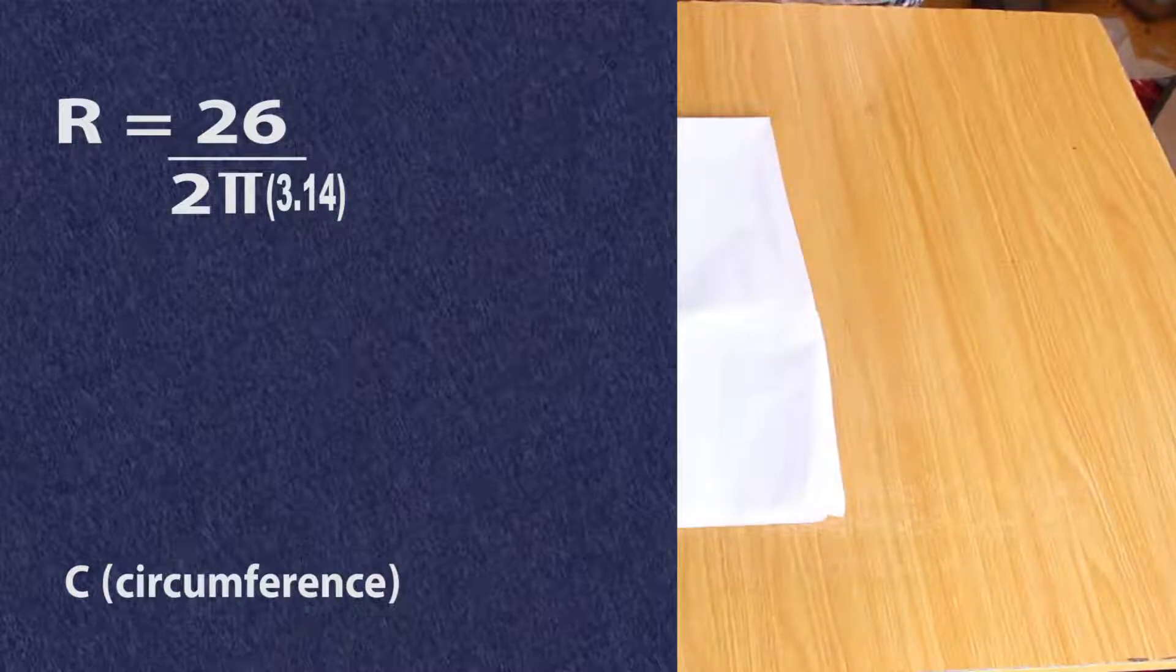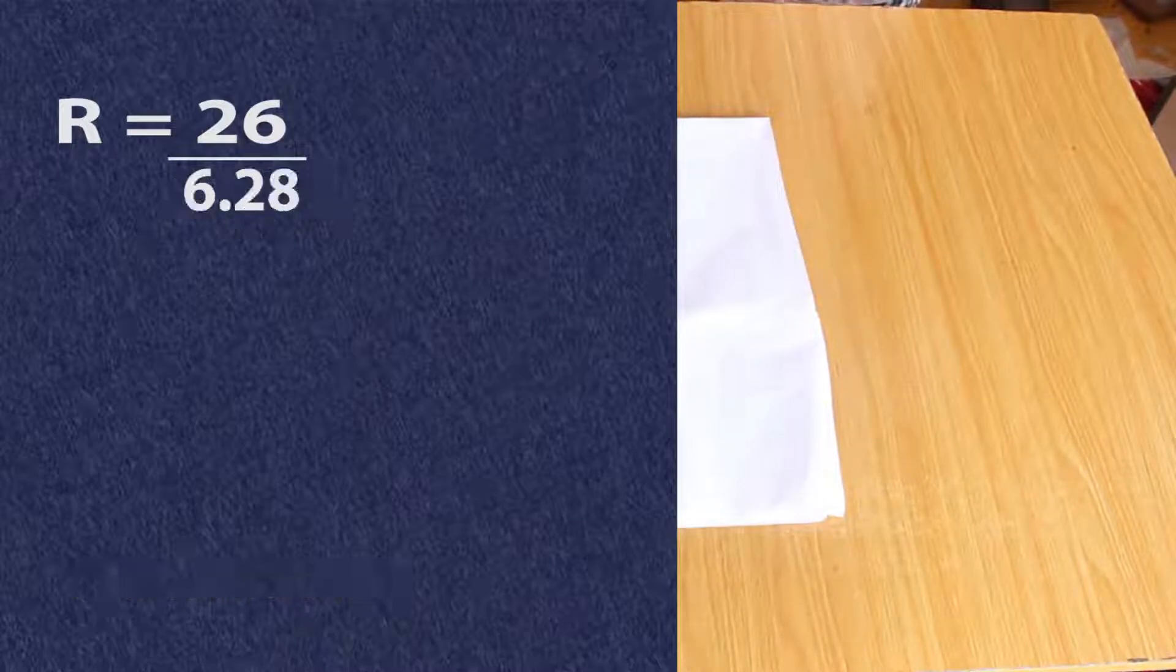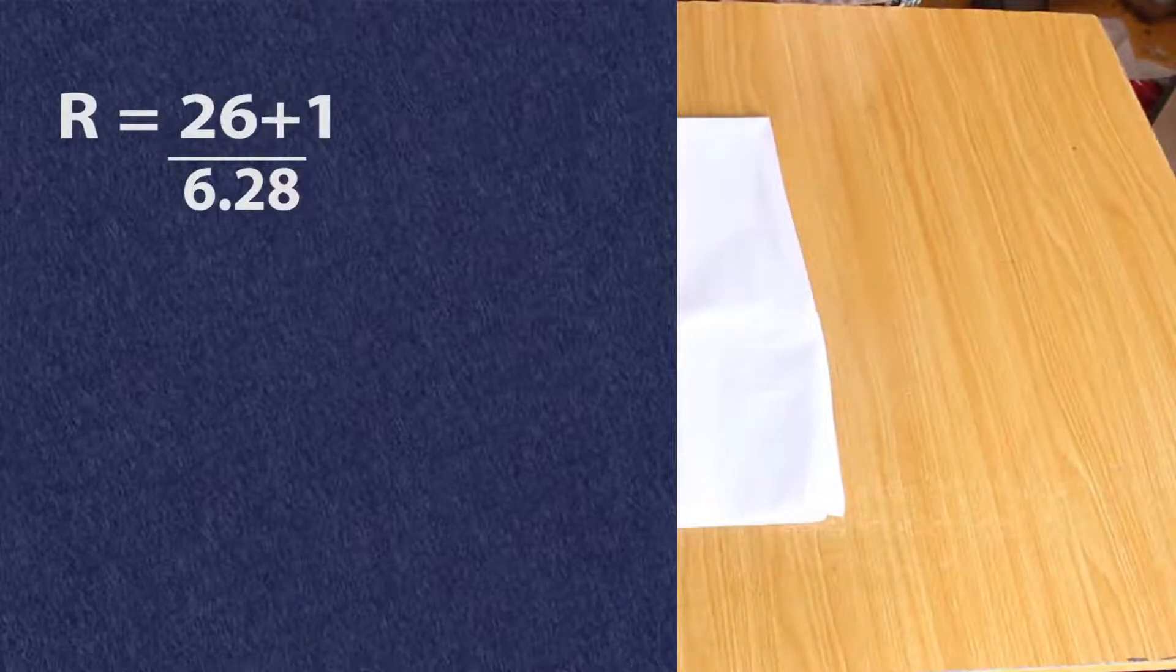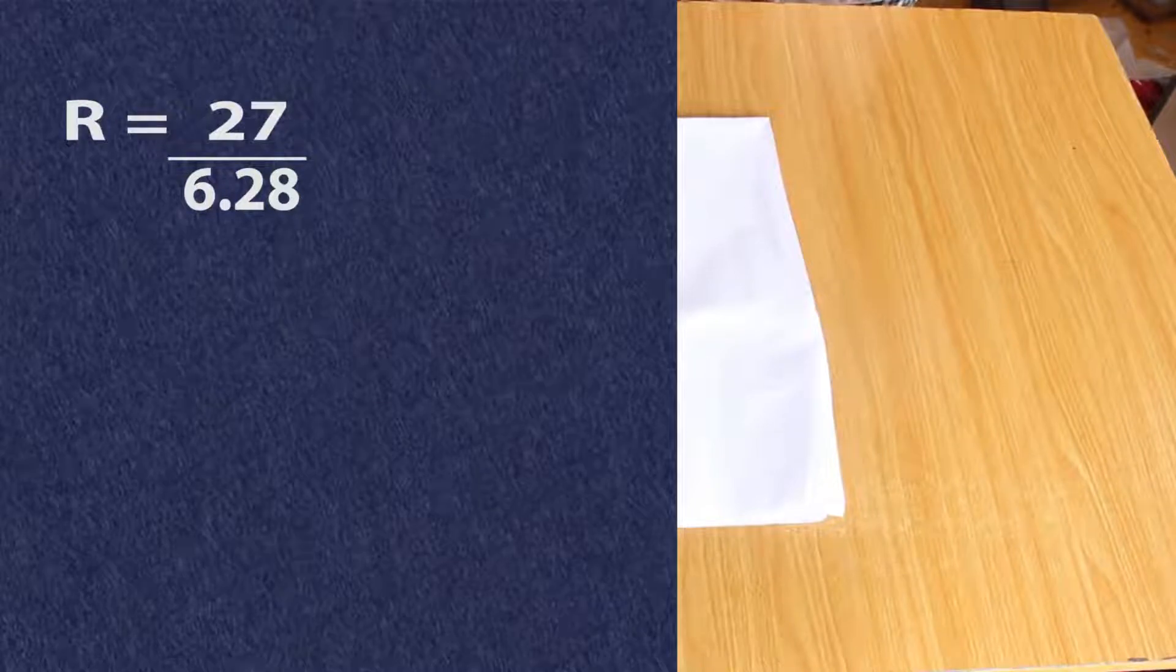I'm going to be adding a zipper allowance at the back of the skirt, so I'm going to add one inch to 26. So 26 plus one inch allowance gives us 27, and you're going to divide 27 by 6.28. So what we have is 4.3. Our radius is 4.3, easy right?